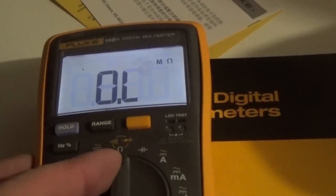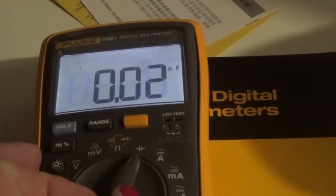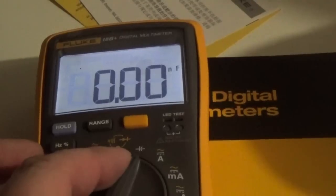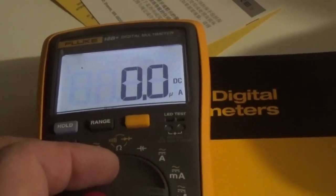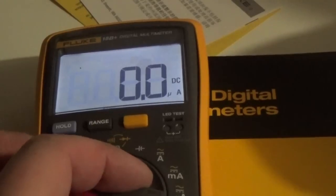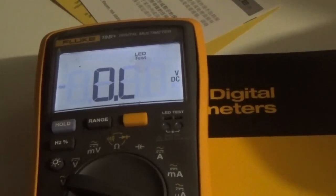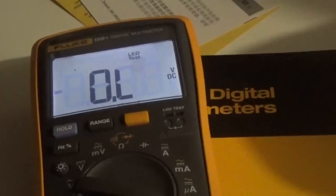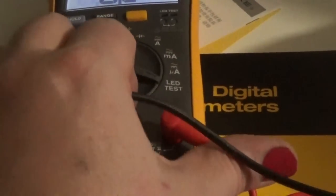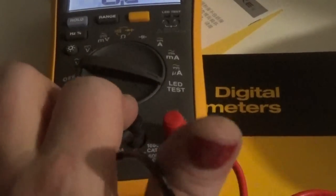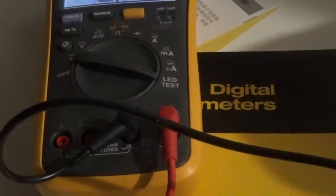It's got DC amps, milliamps, microamps. It's got four to ten amp fused down here and it's got a ground and category three 600 volt output.